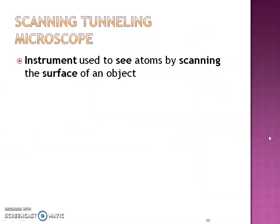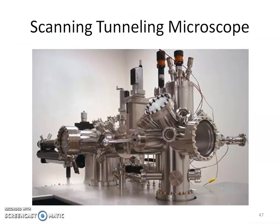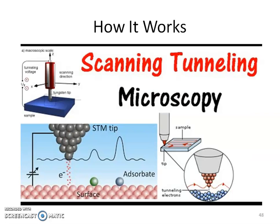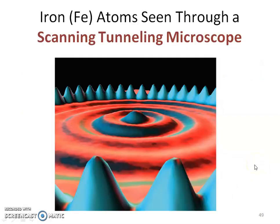The scanning tunneling microscope is an instrument used to scan the surface of an object so we can finally start seeing what these atoms truly look like. This is a big monstrosity compared to an ordinary microscope. It works by scanning the surface with a tiny tip — this tip scans the surface of whatever object you're examining. You see little bumps: when there's a big atom, you get a bigger bump. These electrons are skimming the surface, and as they skim, they generate these bumps.